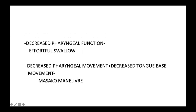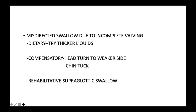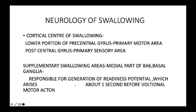For decreased pharyngeal function, effortful swallow is preferred. For decreased pharyngeal and tongue base movement, the Masako maneuver is used. For ineffective bolus clearance, multiple effortful swallows and bolus volume modification are recommended. For misdirected swallowing due to incomplete vocal cord closure such as vocal cord paralysis, liquids can be thickened and the head turned to the weaker side to close that piriform sinus.